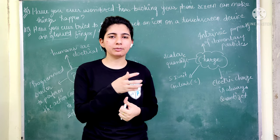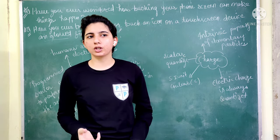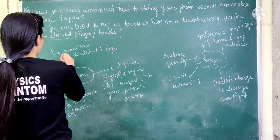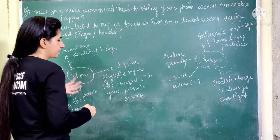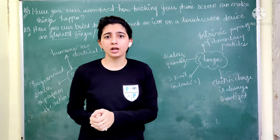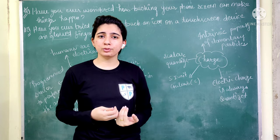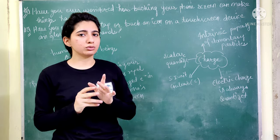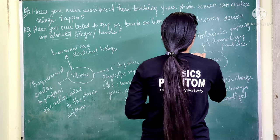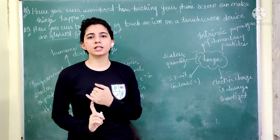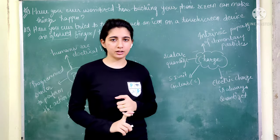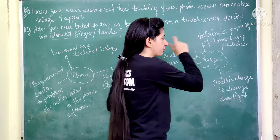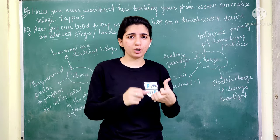But why is this? Because when we wear gloves, why does the screen not respond? The first thing is that humans are electrical beings. It means we have charges in our bodies. What is charged in the human body? What role does charge play? The first thing is that charge is an intrinsic property of elementary particles — electrons, protons, and neutrons.